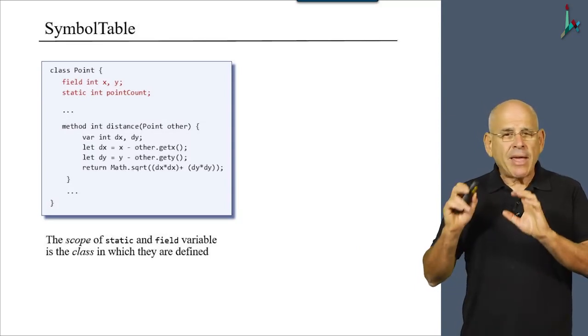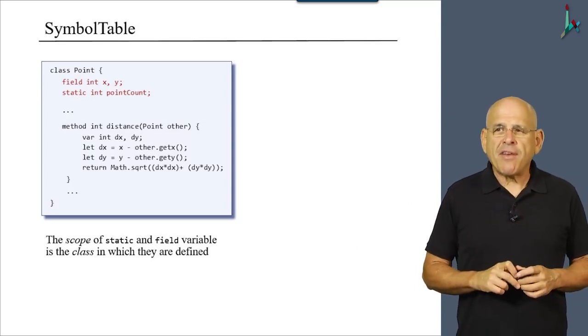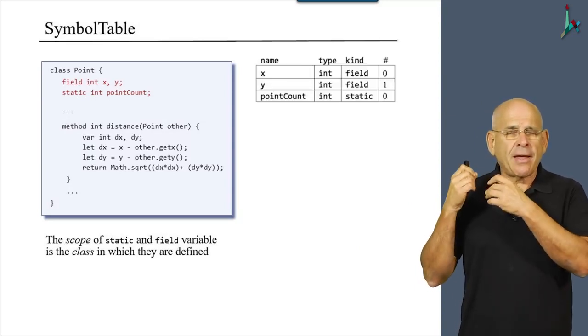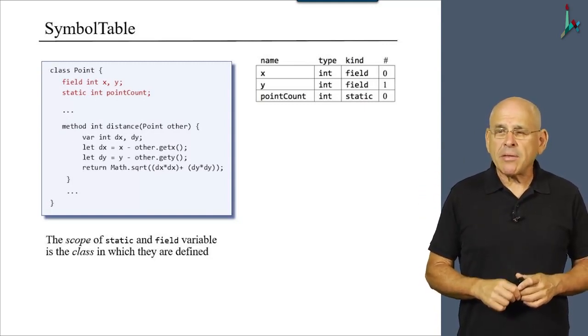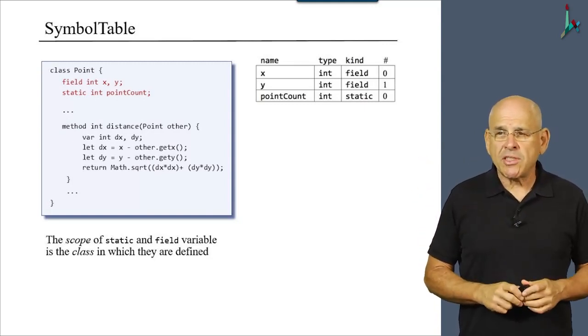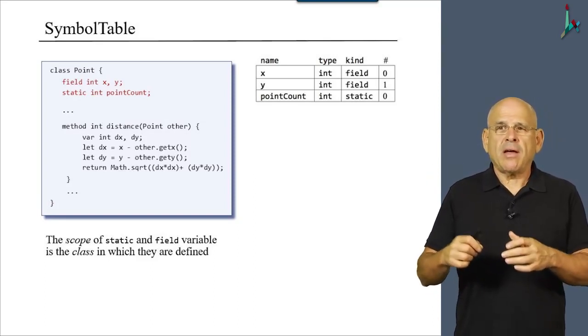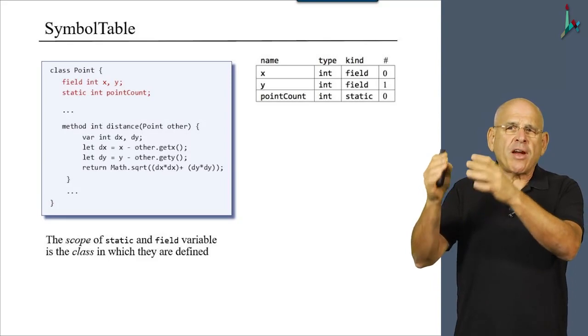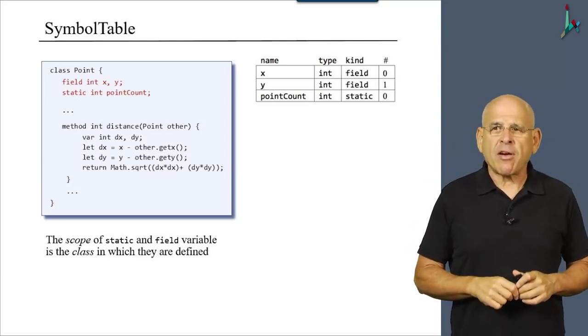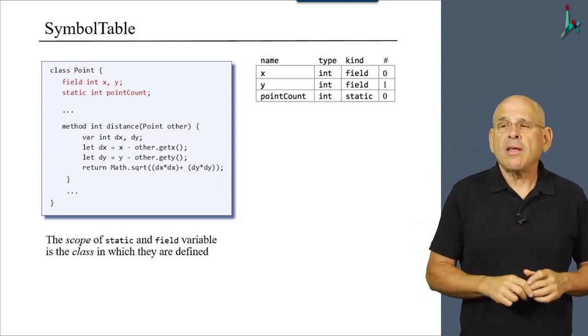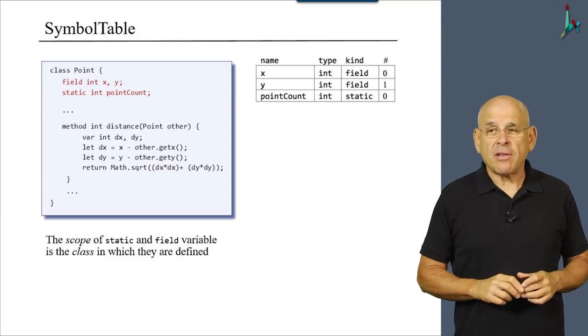And the compiler keeps track of these variables using a class level symbol table, an example of which you see here. So as you see, the three, the two field variables and the single static variables are accounted for in the class level symbol table.